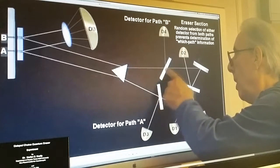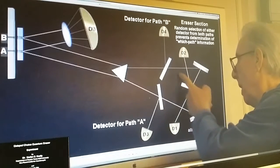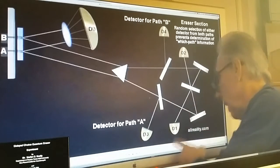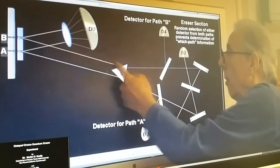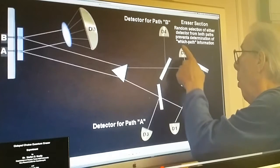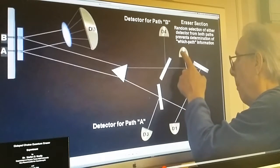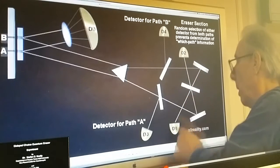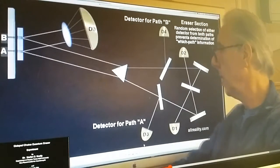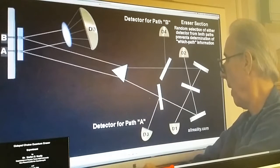Because when the photon gets here, they bounce around again, half-silvered mirror, so it can either get detected. This path B can either get detected D1 or D2 because it can bounce up or it can come down. Same thing for path A.